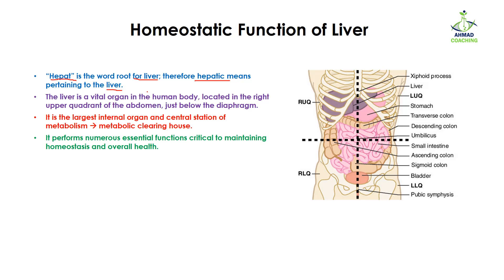The liver is a vital organ in the human body. It is located in the right upper quadrant of the abdomen, just below the diaphragm. Here you can see the structure of the human body divided into four quadrants — the liver is present in the right upper quadrant, just below the diaphragm.